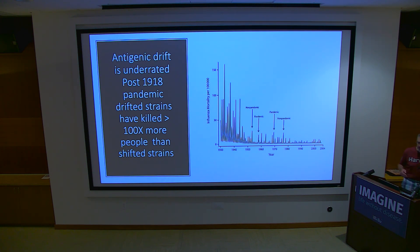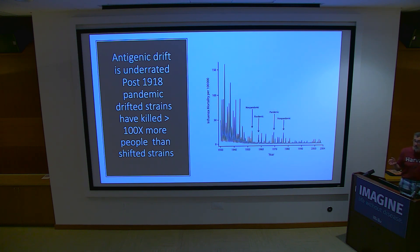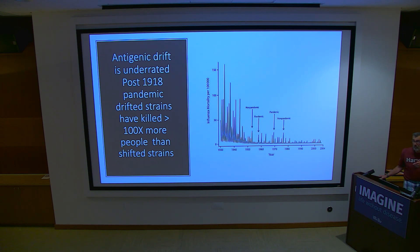People are super worried about shift, but 1918 was a big deal — something like 2% mortality in a much smaller world, 50 to 100 million deaths, worse than COVID. There were shifts in 1957, 1968, and 2009. But if you add up the deaths from shifts versus yearly deaths from drift, 100 times more people are dying from drift than from shift. So drift is really underappreciated.